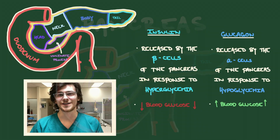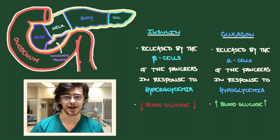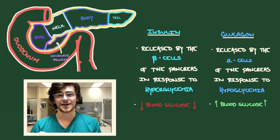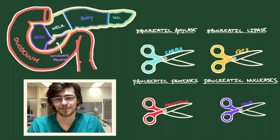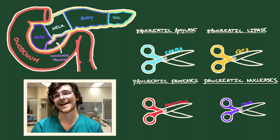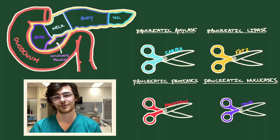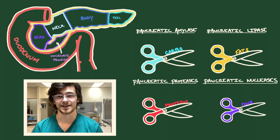The pancreas is well known for its endocrine function — maintaining proper blood glucose levels through the hormones insulin and glucagon — but it also has a profound impact on digestion. The acinar cells of the pancreas secrete a wide array of macromolecule-digesting enzymes: pancreatic amylase for carbs, pancreatic lipase for fats, multiple inactive protein-cleaving enzymes, and even nucleases to break down any animal or plant DNA that has entered the diet.